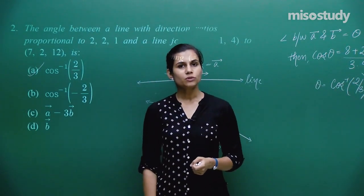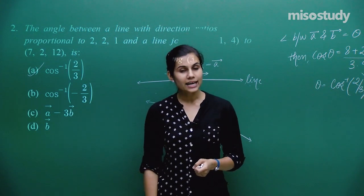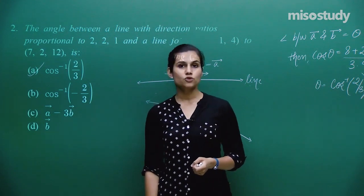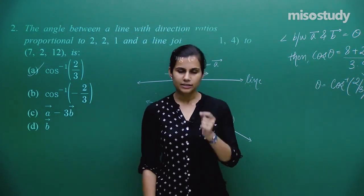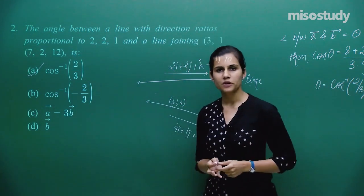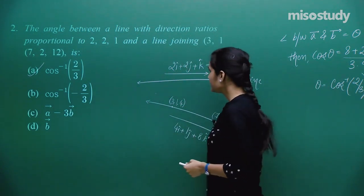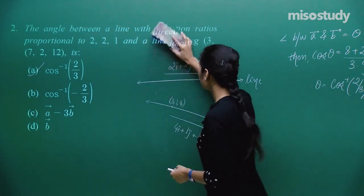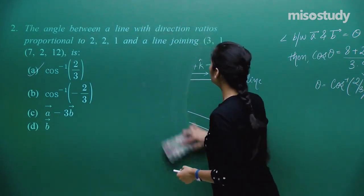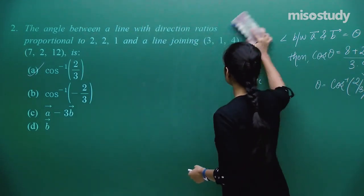The angle between two lines is the same as the angle between the vectors to which they are parallel. If you are aware of this concept, you can very easily decode the angle between any two given lines.